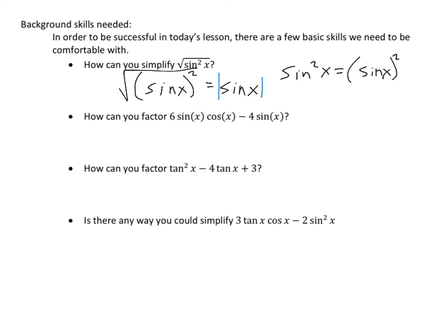The second skill: how can you factor 6 sine x cosine x minus 4 sine x? These two expressions both have common factors — they both have a 2 and a factor of sine x. If I factor those out, I'm left with 2 sine x times (3 cosine x minus 2).